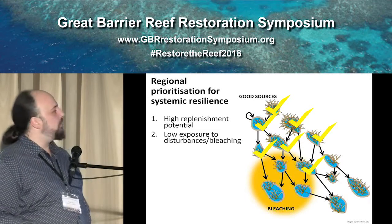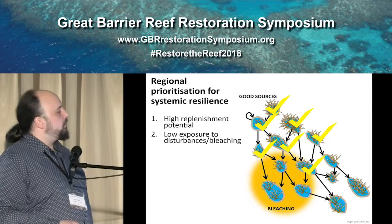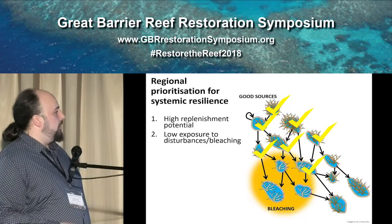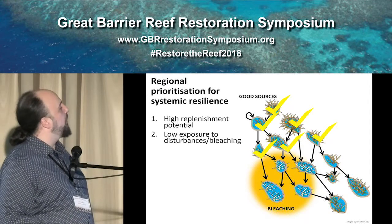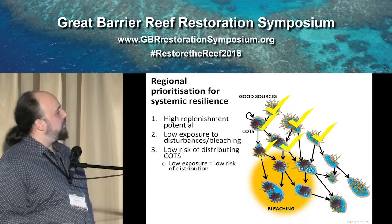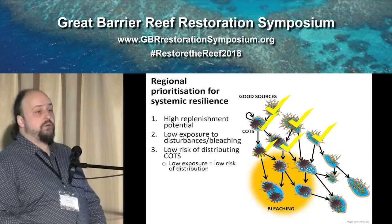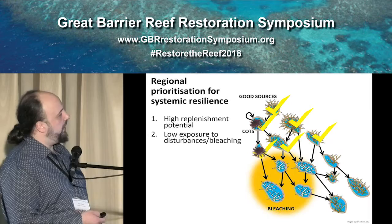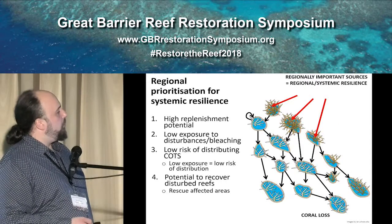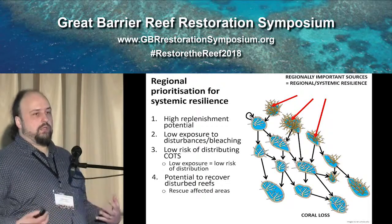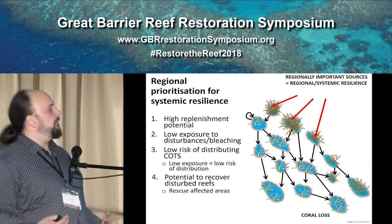Then we look at how likely these reefs are to be exposed to disturbances like bleaching, which was a big issue in the last couple of years. Because reefs exposed to bleaching are not going to have healthy adult stocks, we say those reefs likely have reduced adult stocks and actually need help rather than being able to provide it — so we exclude a few of those. Then we look at COTS: we want to see which reefs are going to be at lower risk of experiencing COTS and distributing COTS, because low exposure also means low risk of distribution. So if we know where COTS are, we predict how COTS will spread, exclude those reefs too, and we end up with reefs that have potential to recover the disturbed reefs in the region — the regionally important sources that help the whole region bounce back.